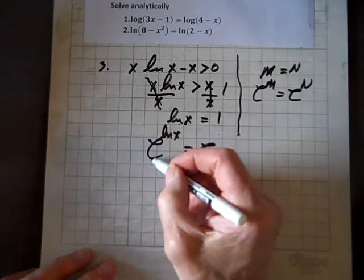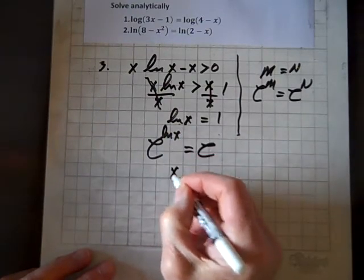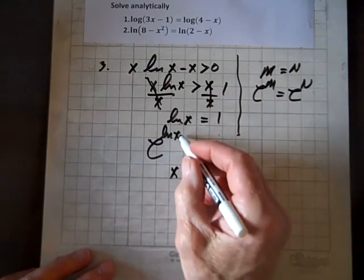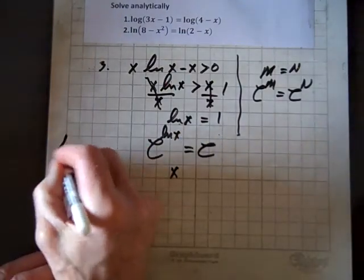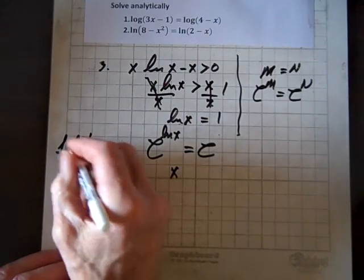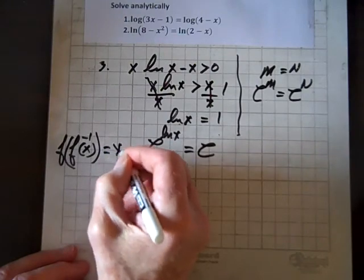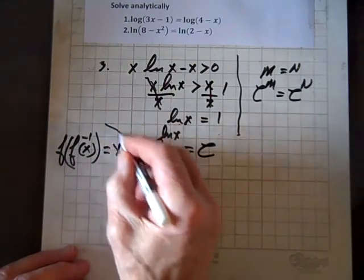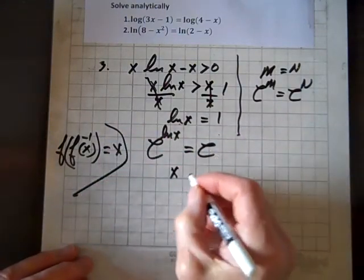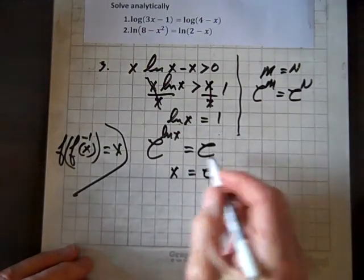But this is the composite of inverse functions, so what we get back is x. In other words, f of f inverse of x, the composite of inverse functions, always gives you back what you start with, x. Okay, so x equals e, and we're done. That's our solution.